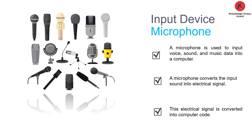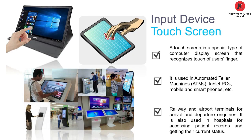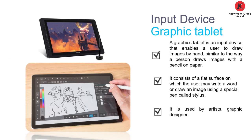The next input device is the microphone, which is used to input voice, sound, or record music into the computer. Next is the touch screen — smartphones and smart screens have touch screens. A touch screen is a special type of display that recognizes the user's finger. Examples include ATM machines, tablet PCs, mobile phones, and kiosks at railway stations or airports. A graphic tablet is an input device that enables a user to draw images by hand, similar to drawing with a pen or pencil. It is generally used by artists or graphic designers.